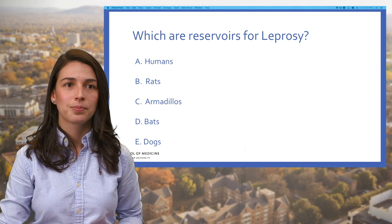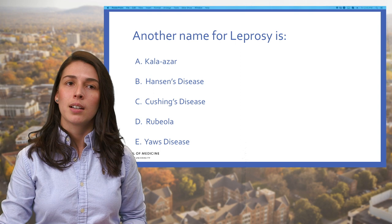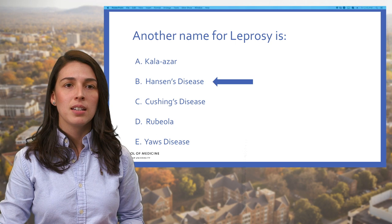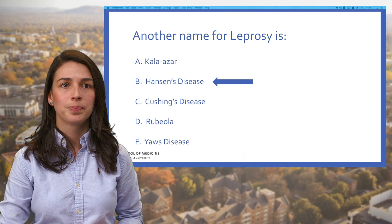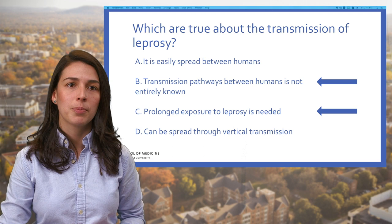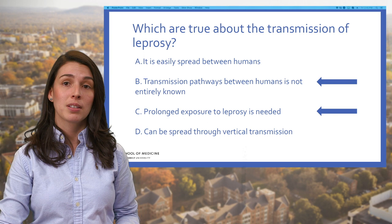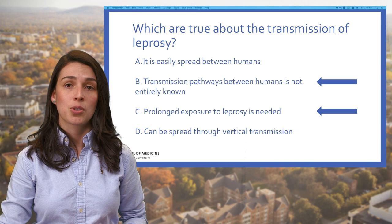It's time for questions. Which are the reservoirs for leprosy? Humans and armadillos are both reservoirs for leprosy. Another name for leprosy is Hansen's disease — Dr. Hansen discovered leprosy in 1873. Regarding transmission: although the exact transmission pathway is not entirely known, prolonged exposure is required, so it is not easily spread between humans. Additionally, leprosy is not spread through vertical transmission or sexual transmission.